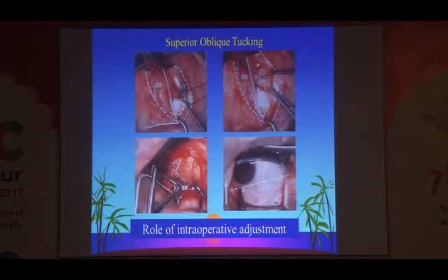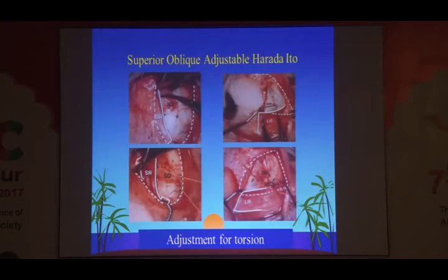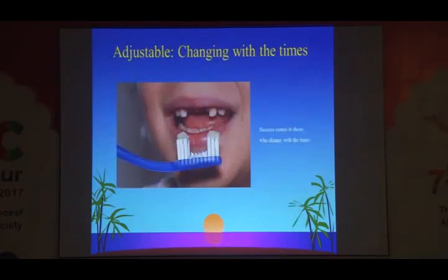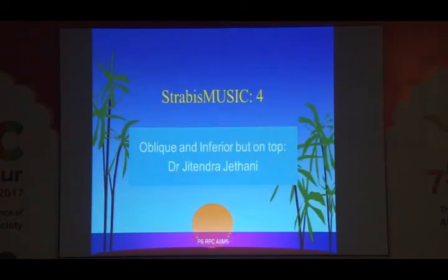Even torsions — the superior obliques can be adjusted, the inferior obliques can be adjusted, any muscle can be adjusted. It is up to you how capable of adjustment you are and how much you can change. Inferior oblique procedures were already discussed. Remember that we are also going to change the torsion. If you have an inferior oblique overaction, you have excyclotorsion. After the inferior oblique surgery, this can be corrected.